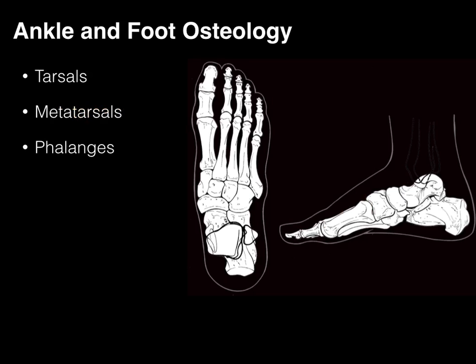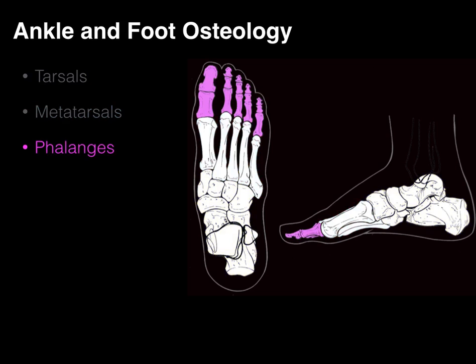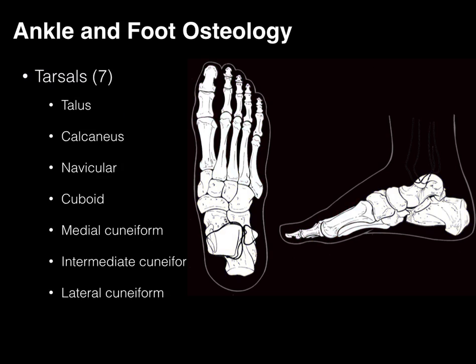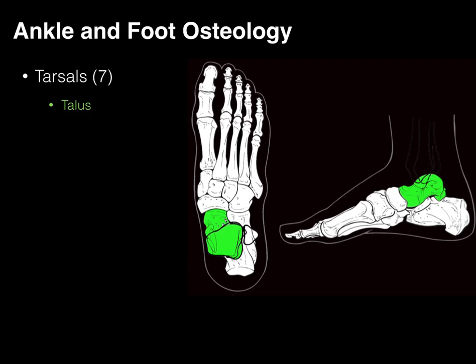Now let's talk about the tarsals — these irregular bones that make up a good chunk of the foot — as well as the metatarsals and phalanges. There are seven tarsal bones, and these tarsal bones are much larger than their homologous carpal bones in the hand because they bear a whole lot more weight. First, there is our talus, which articulates with the tibia and bears the brunt of all the force of the body as it comes down onto the foot. Below that is the largest of the tarsal bones, the calcaneus, or your heel bone.